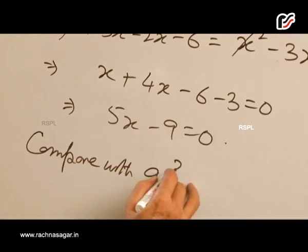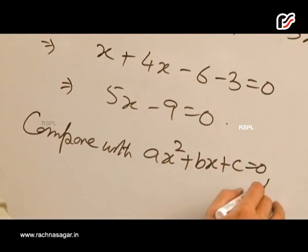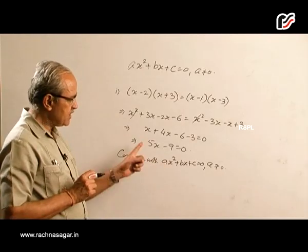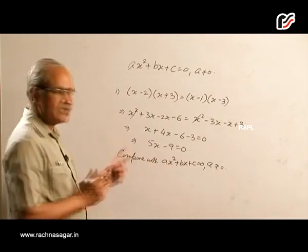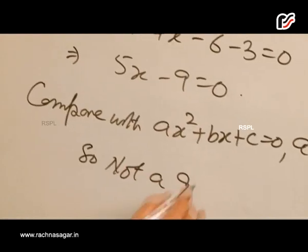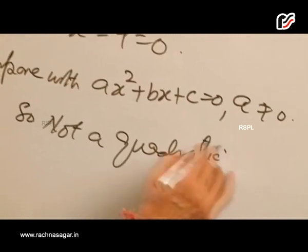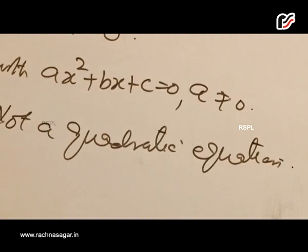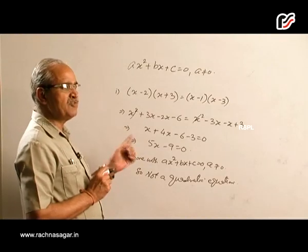Now compare with ax² + bx + c = 0, a ≠ 0. We notice there is no term of x², so this is not a quadratic equation.